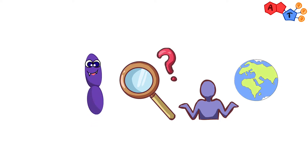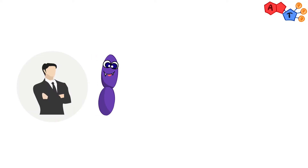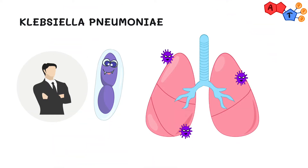Have you ever thought about the history of Klebsiella? In 1882, Carl Friedlander first described Klebsiella pneumoniae as an encapsulated bacillus after isolating the bacterium from the lungs of those who had died from pneumonia. It makes sense that it was originally named Friedlander's bacillus, and years later the bacterium garnered the name Klebsiella.